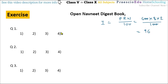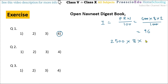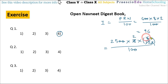Question number 2: Rutuja gave Prana ₹2500 on simple interest for 6 months at the rate of 8% per annum. How much interest will Prana pay? Since the period is 6 months, we use N = 6/12. So I = 2500 × 8 × (6/12) / 100. The two zeros cancel, and simplifying gives 4 × 25 = 100. The interest is ₹100, option number 1.